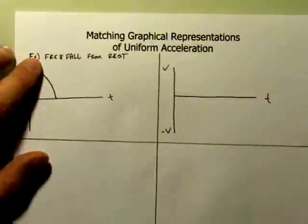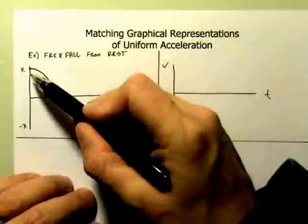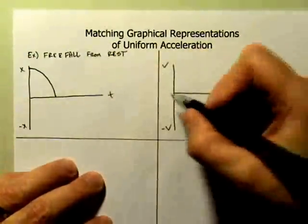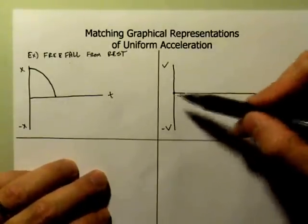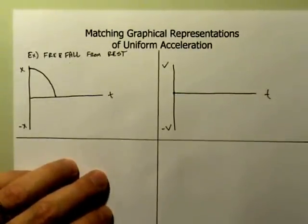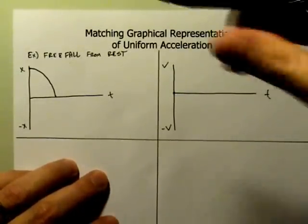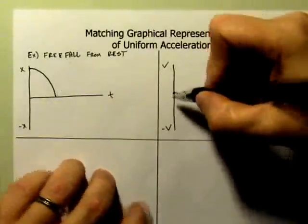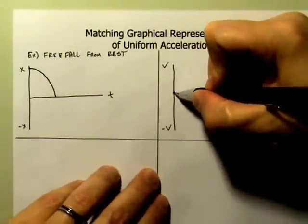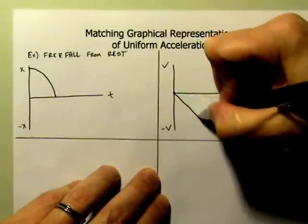Now how does that look on the VT graph? Well, remember, we had no velocity here, so that means that's very simple. There's no velocity. I'm plotting this on the origin. Now where do I go from there? I find that I have an increasing negative direction. Negative slope, negative velocity. So on the VT graph, I would have something that would look like this.